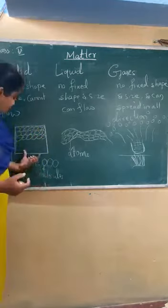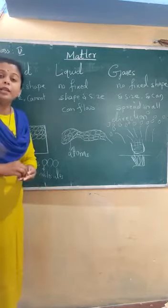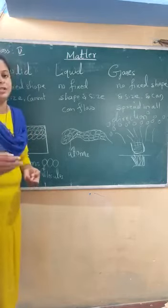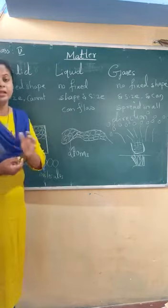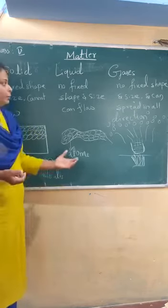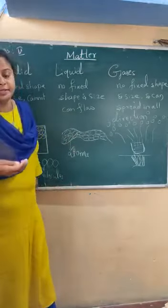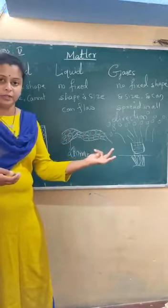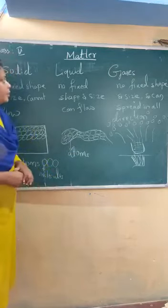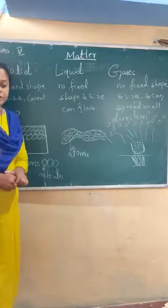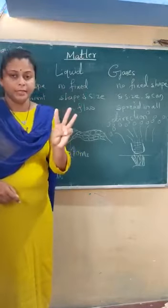Matter is made up of atoms. Atoms are the smallest part of any matter or substance. The smaller part of an atom is the molecule. In the next video we will discuss more about atoms, molecules, elements and compounds. Before ending this video, I want to give you some homework. Write down the three forms of matter with examples.